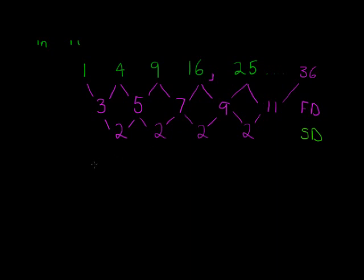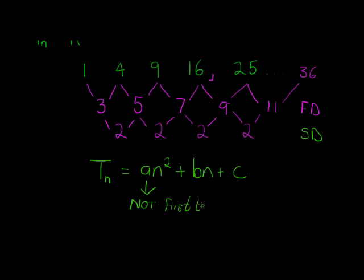But how will we find the general term? The general term, in most general circumstances, looks like this: it's an squared plus bn plus c. And you'll notice that we get 3 parameters, not just 2 as before. Now we have 3 parameters. How are we going to find those 3 parameters? A is not the first term. Be sure that you know that.